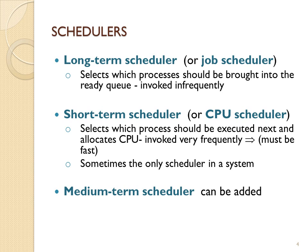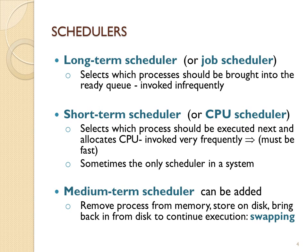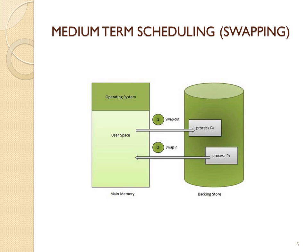The long-term scheduler controls the degree of multiprogramming — that is, the number of active processes in your system. The medium-term scheduler is another unit that can be added, and it takes on the role of swapping. Instead of terminating processes to add new tasks, it controls the degree of multiprogramming by swapping those processes that are taking up memory and resources onto a backing store on the hard disk. Both the medium-term and long-term schedulers control the degree of multiprogramming.